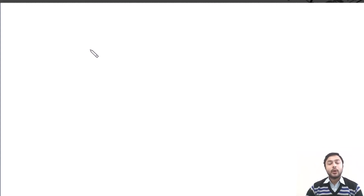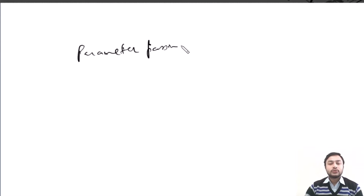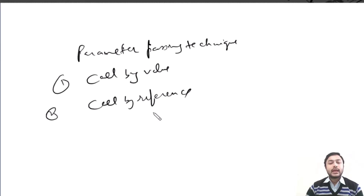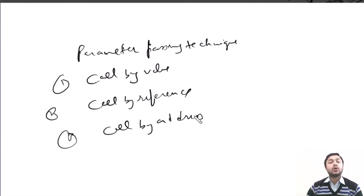Now I will discuss parameter passing techniques. There are three types: the first is call by value, the second is call by reference, and the third is call by address. These are all the parameter passing techniques.